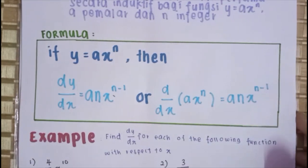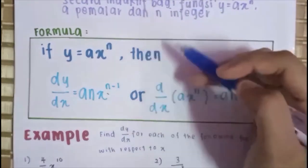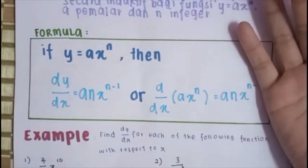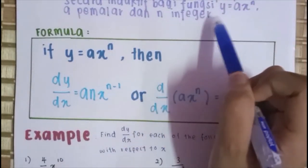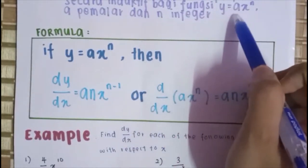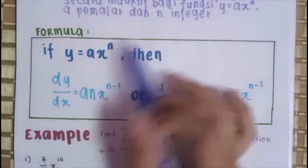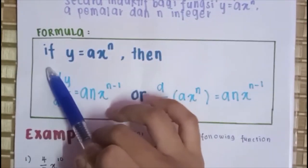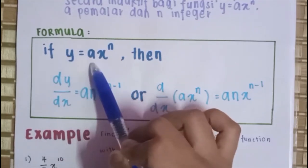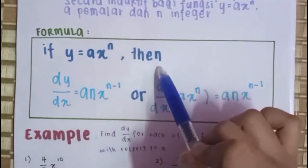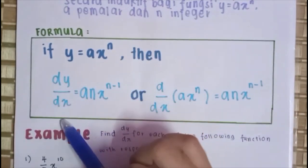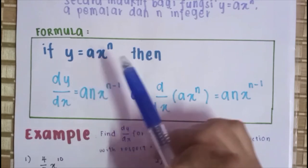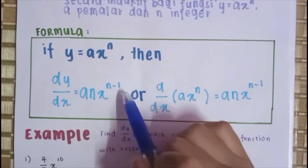Di sini saya menulis tentang formula yang kita akan dapat dengan menggunakan fungsi Y sama dengan AX kuasa N. Formula dia akan jadi macam ni. If Y sama dengan AX kuasa N, then DY per DX sama dengan ANX kuasa N tolak 1.